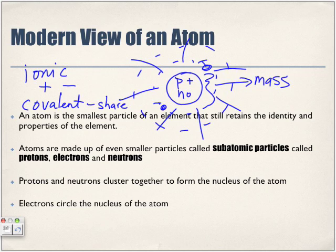To summarize: the nucleus consists of protons and neutrons, and surrounding the nucleus are electrons. It is the electrons that actually interact with any other atom when forming bonds.